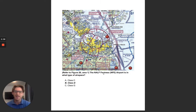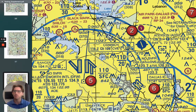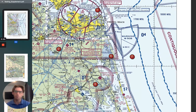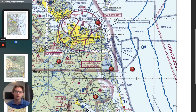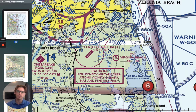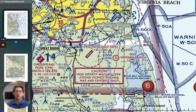Question 2: The NALF Fentress Airport is what type of airspace? So I'm going to go to figure 20, area 1 — figure 20 is page 53. We're going to go to area 1, around this area. So we have area 1, Fentress NALF Airport, which is what the question mentioned. It's asking what airspace this is. Immediately I see around this airport a dashed magenta line. Remember, when it is a dashed magenta line, that means it's Class Echo to the surface — all the way down to the airport level is Echo airspace.